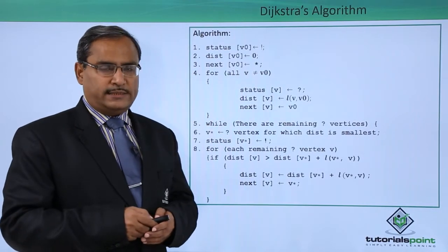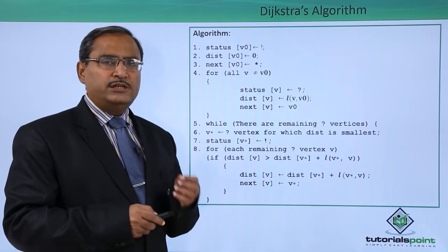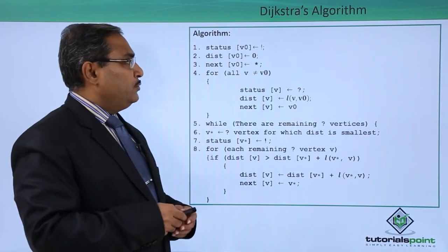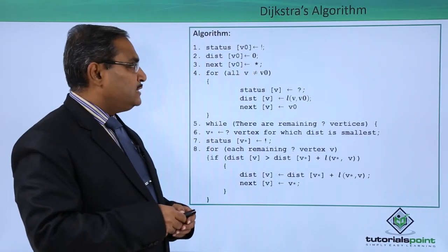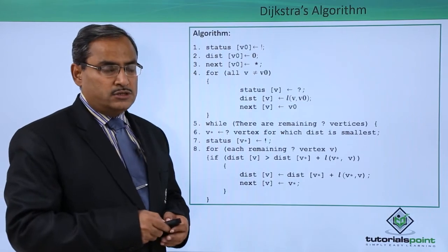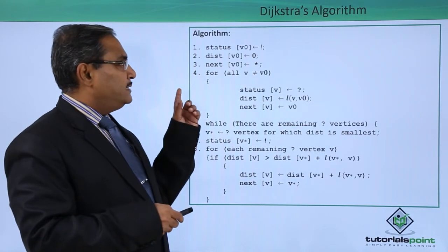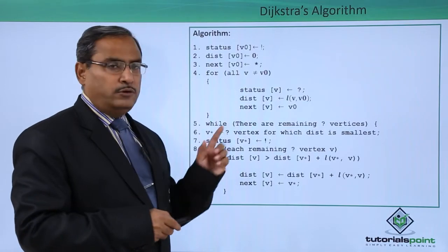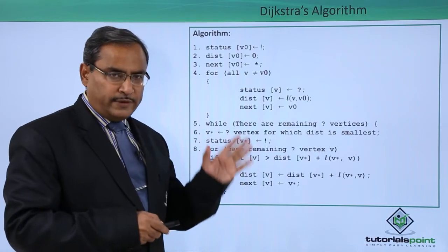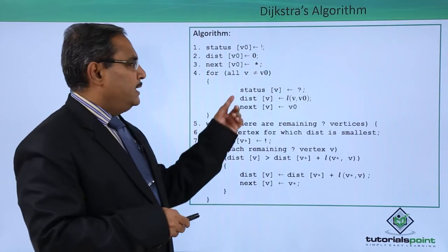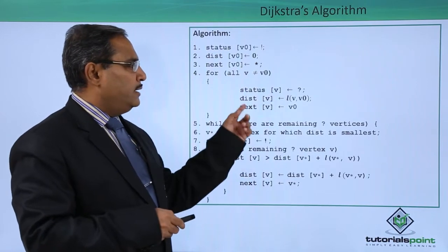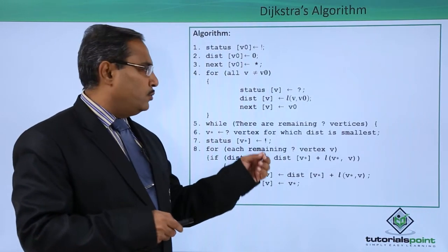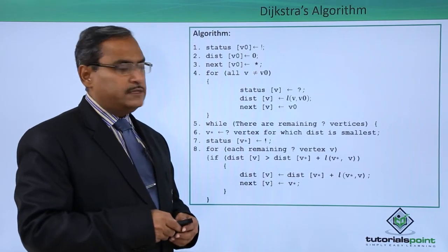We initialize three arrays: status, dist, and next. For the source vertex v0: status[v0] = '!', dist[v0] = 0, next[v0] = '*'. For all other vertices v not equal to v0: status[v] = '?', dist[v] = L(v, v0), and next[v] = v0.